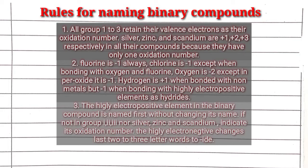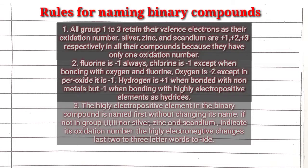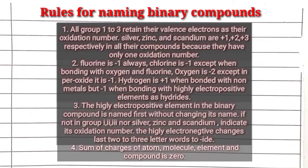The last rule is that the summation of all charges or oxidation numbers of a particular compound is always zero. This applies to elements, molecules, and atoms — they are all neutral. That means when you sum up all the charges in a compound, it must give you zero.